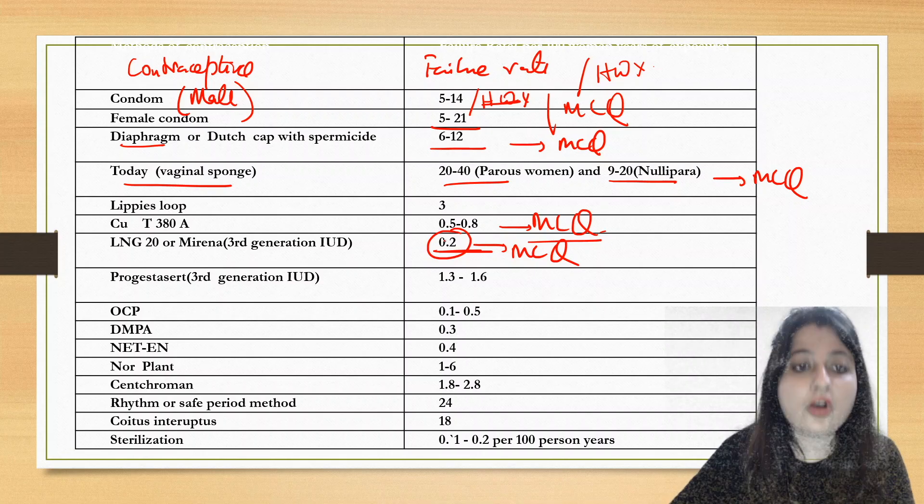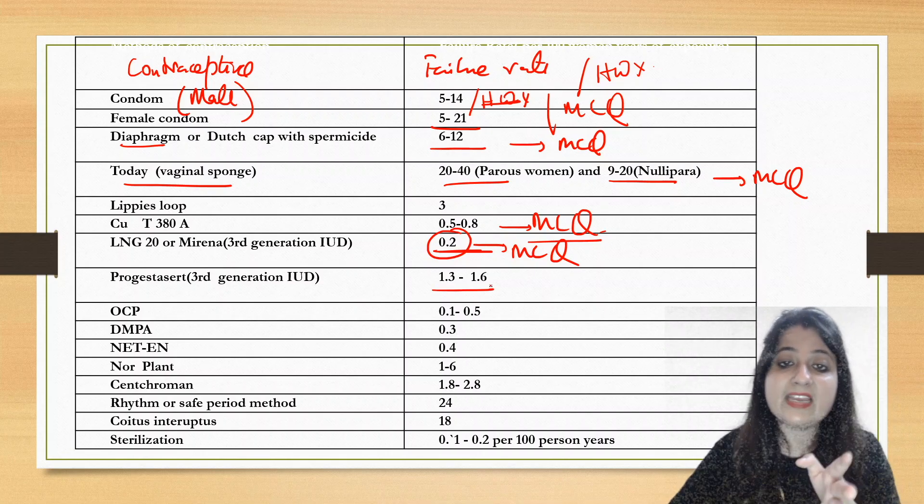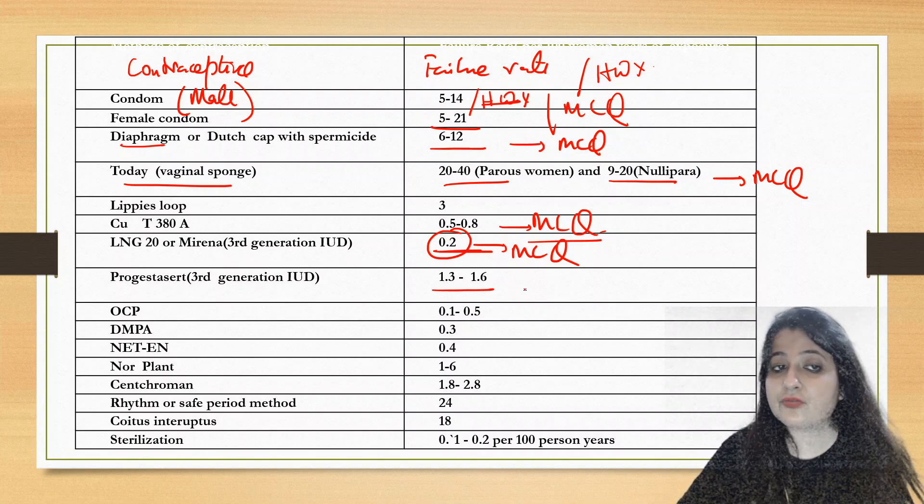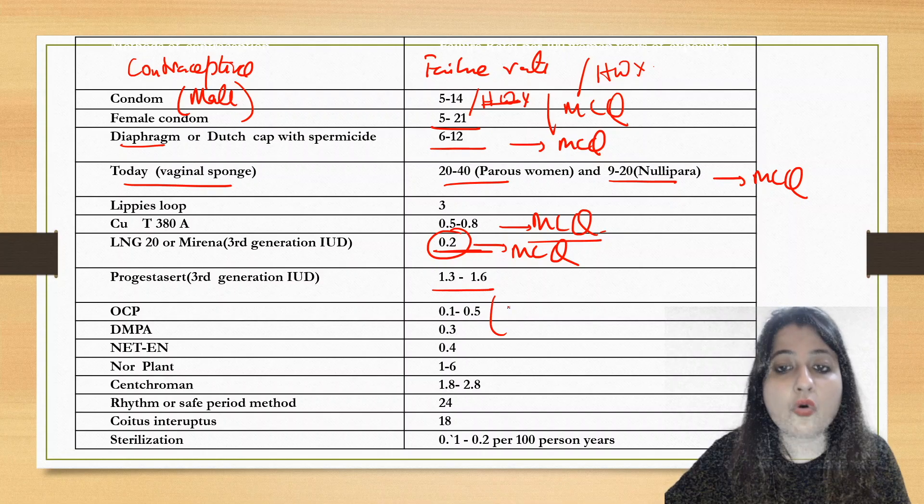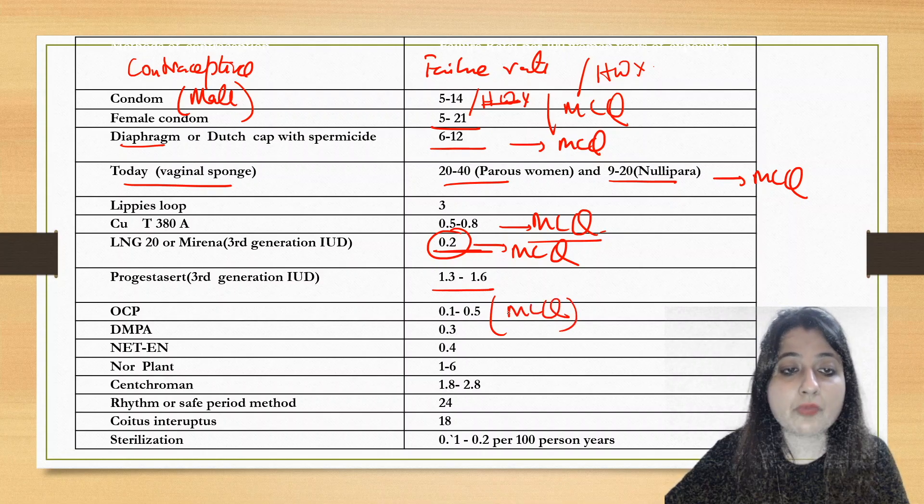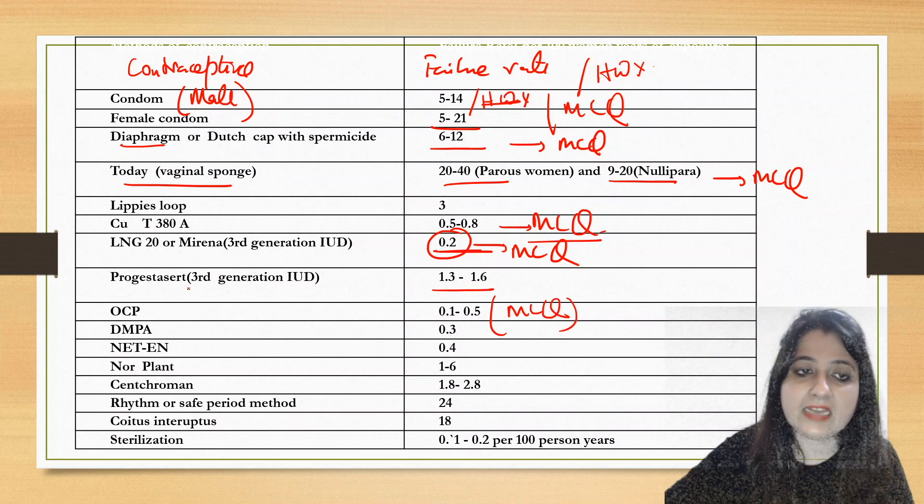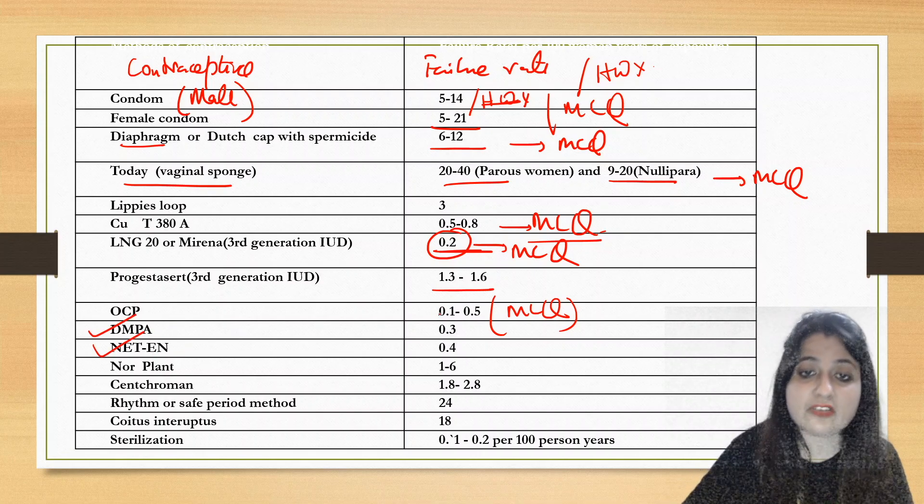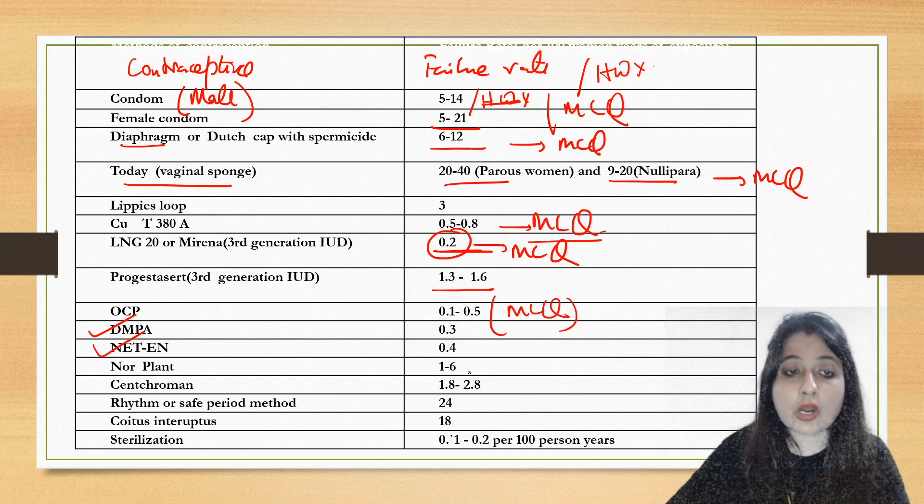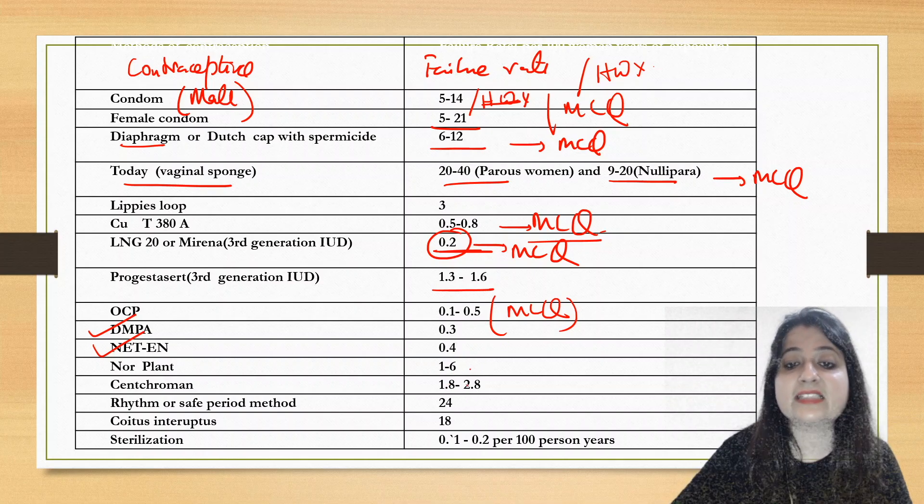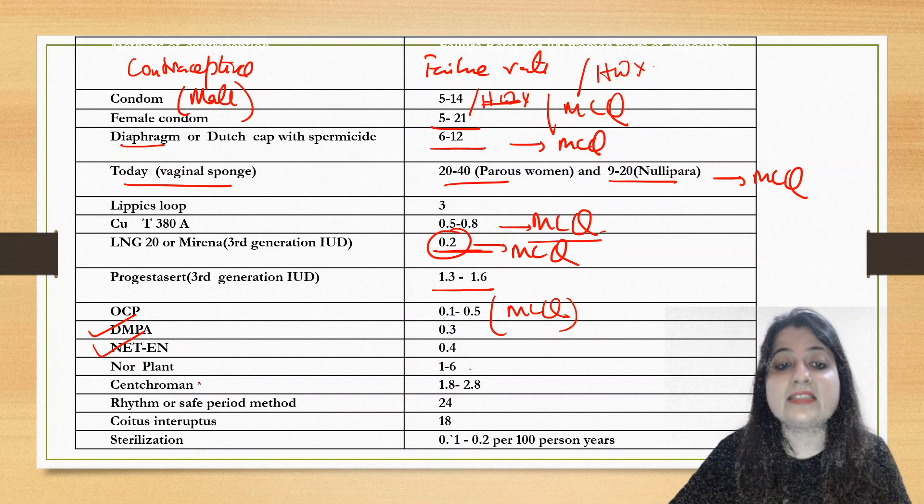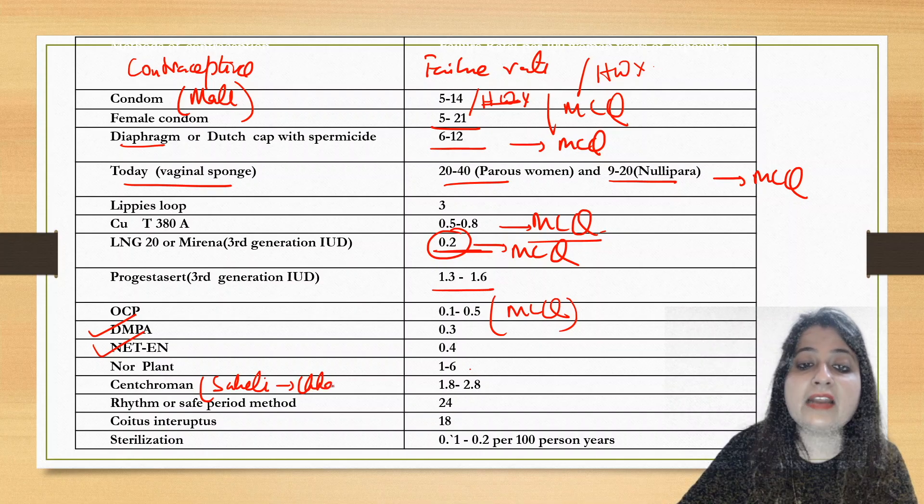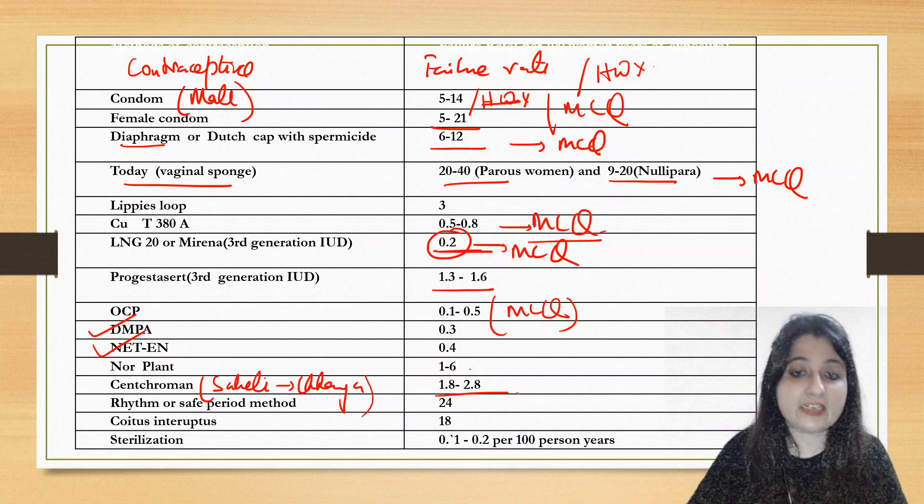Progesta cert goes in the range of 1.3 to 1.6. Myrena shelf life is 5 to 7 years, Progesta cert 1 year. OCP is again important: 0.1 to 0.5 is its failure rate. DMPA is injectable hormonal contraceptive. Norethisterone enantate 0.3 to 0.4. Norplant is quite high at 1.6. Centchromen - again Centchromen is Saheli or Chaya which is now available under our program by the name of Chaya - 1.8 to 2.8.